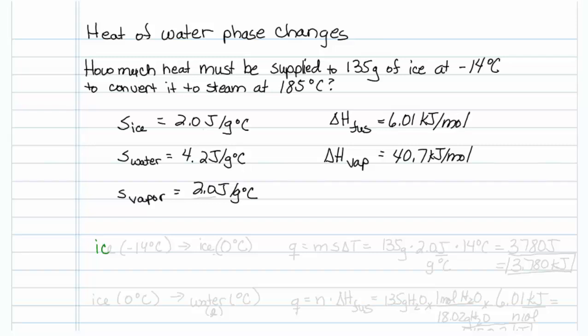First, we're going to have ice at minus 14 degrees Celsius, and we will need to convert it to ice at 0 degrees Celsius, because it just won't melt unless it's at 0 degrees Celsius. Then we're going to have to take ice at 0 degrees Celsius and make liquid water at 0 degrees Celsius. I'll write L down here so maybe you can remember that it's liquid.